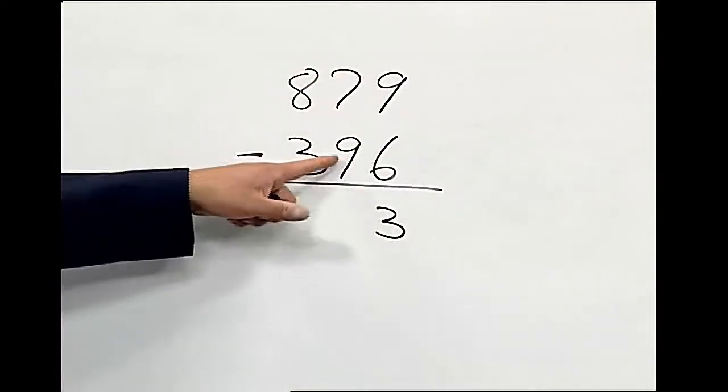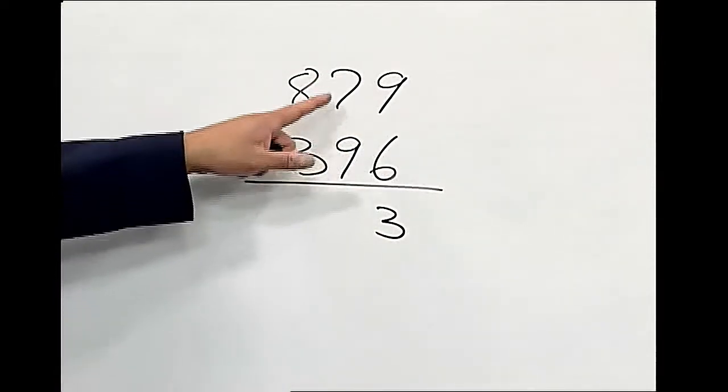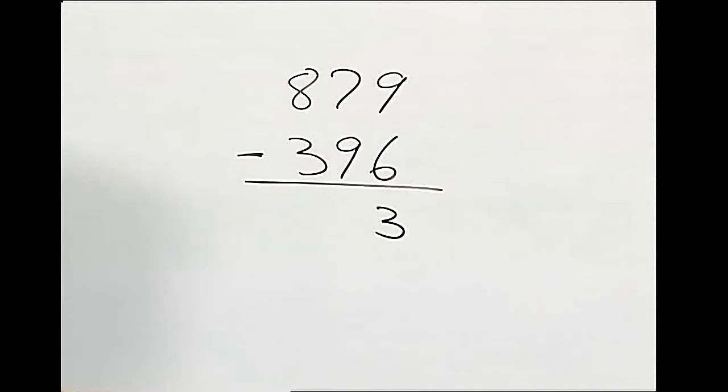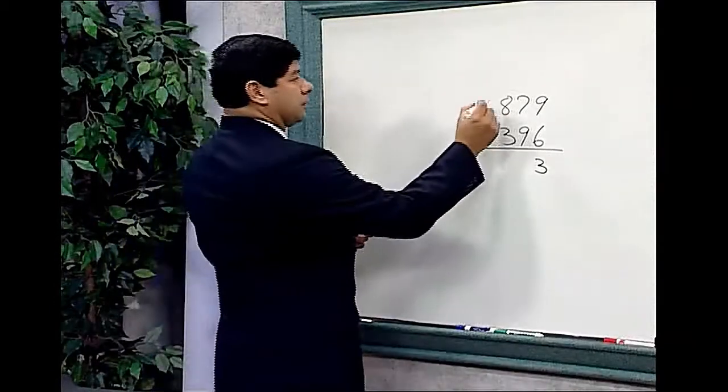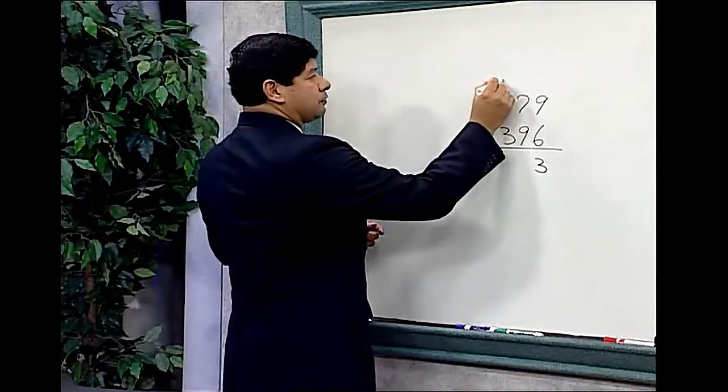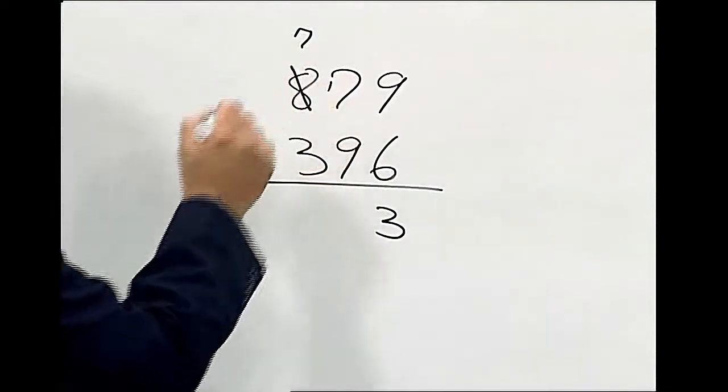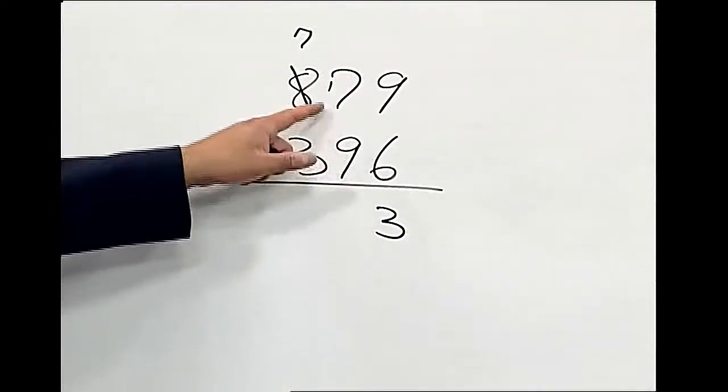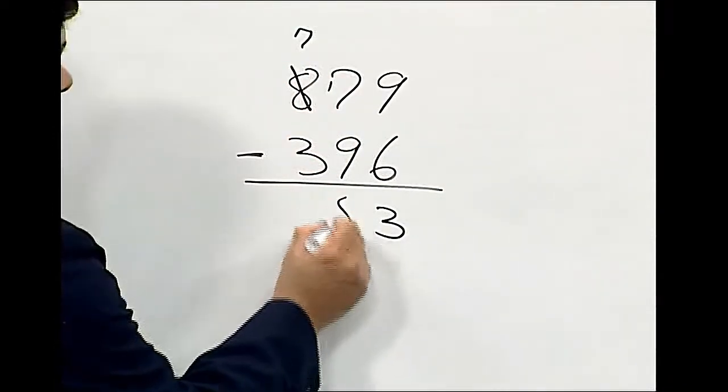Let's look at our tens column. We have a nine in our bottom number and a seven, so we cannot subtract without borrowing. So let's borrow from the eight, which converts that to a seven, and this becomes a 17. So nine from 17 is, of course, eight.